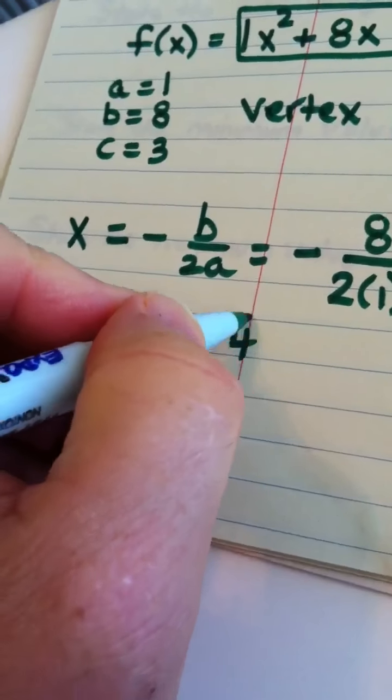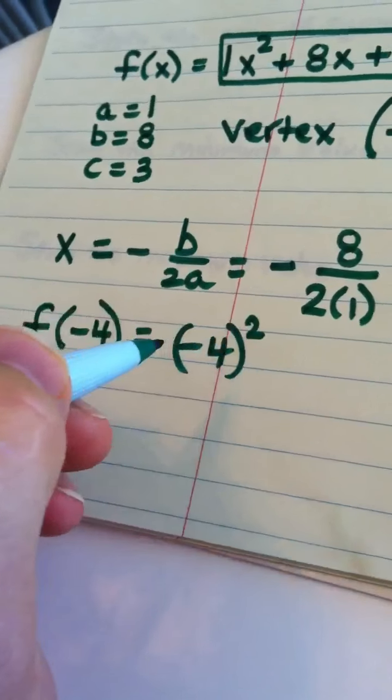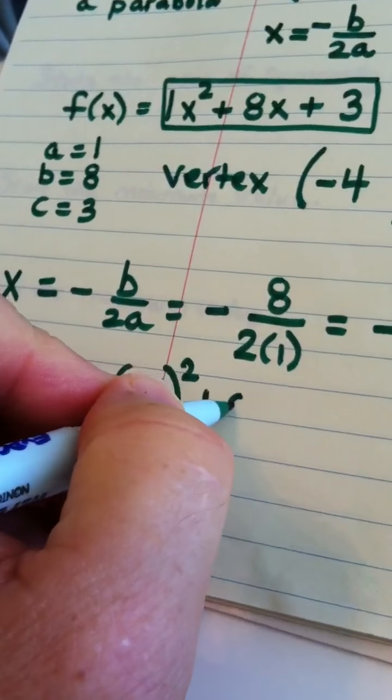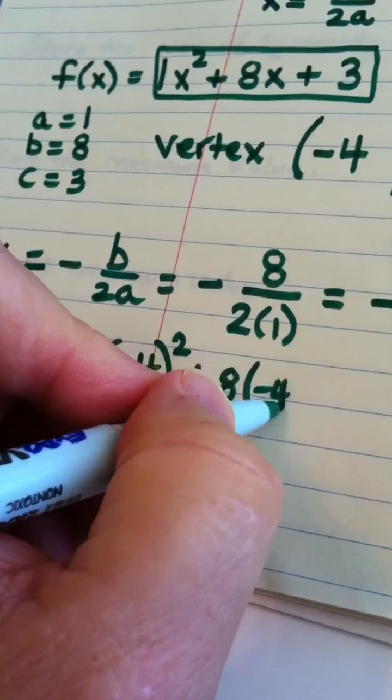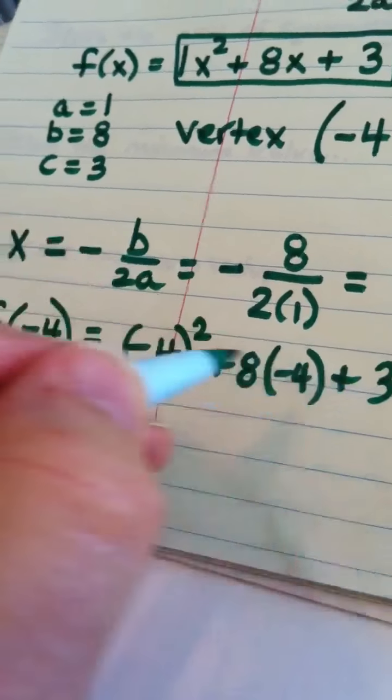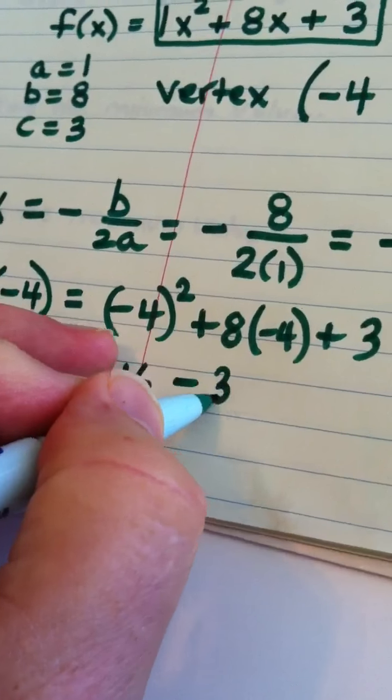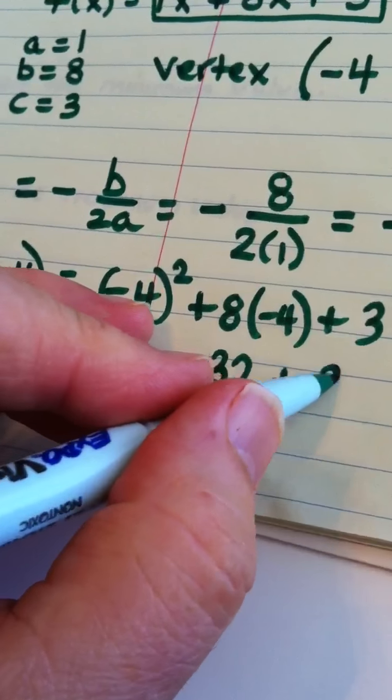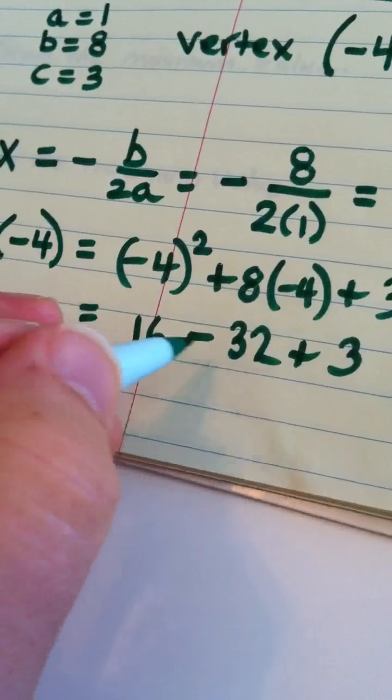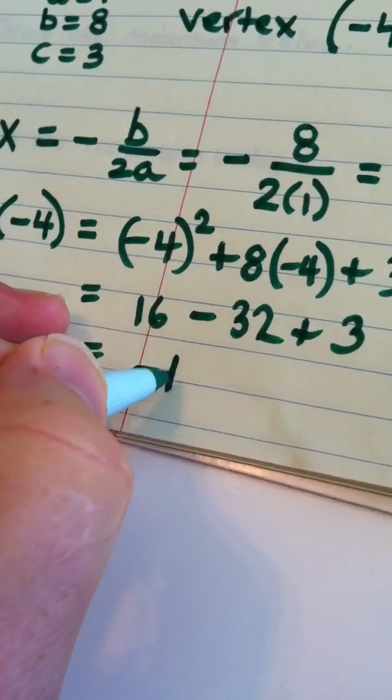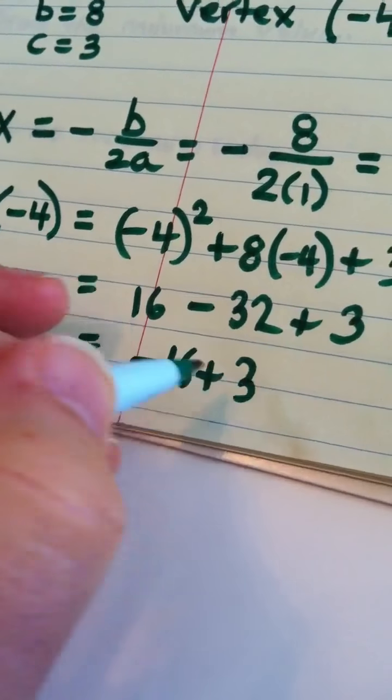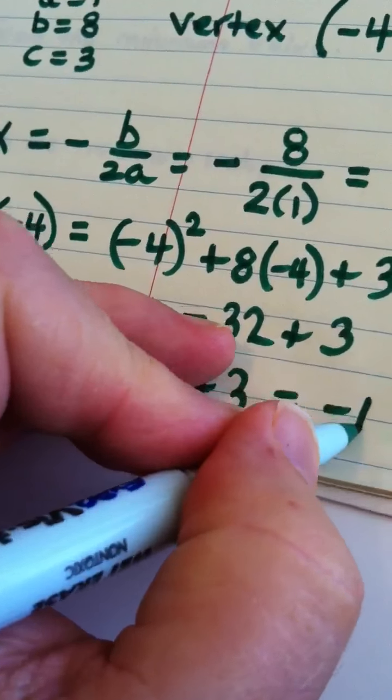I would have negative 4 quantity squared plus 8 times negative 4 plus 3. That would be 16 minus 32 plus 3. This would be negative 16 plus 3, which would be negative 13.